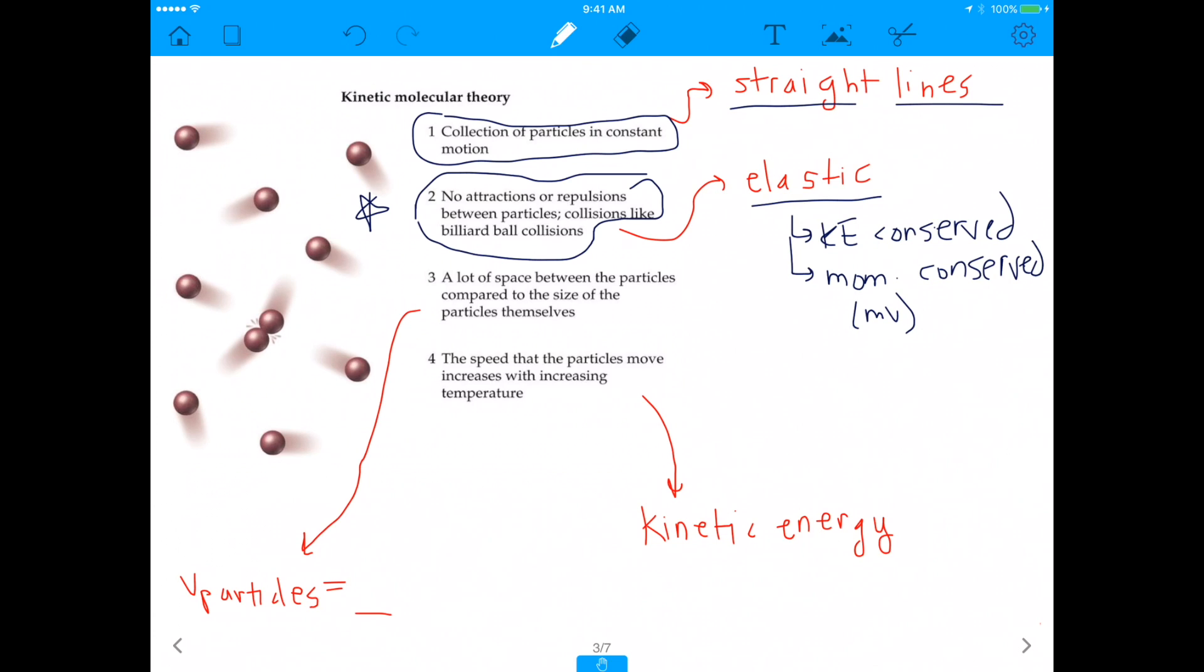So believe it or not, this assumption number two is actually the one that does not really apply to real gases. Number one actually does apply to real gases because gas molecules are usually in motion. They're usually in constant motion. But number two is the one that is going to give us problems because real gases, let's think of something like ammonia, right? If we had a gas bag of ammonia.